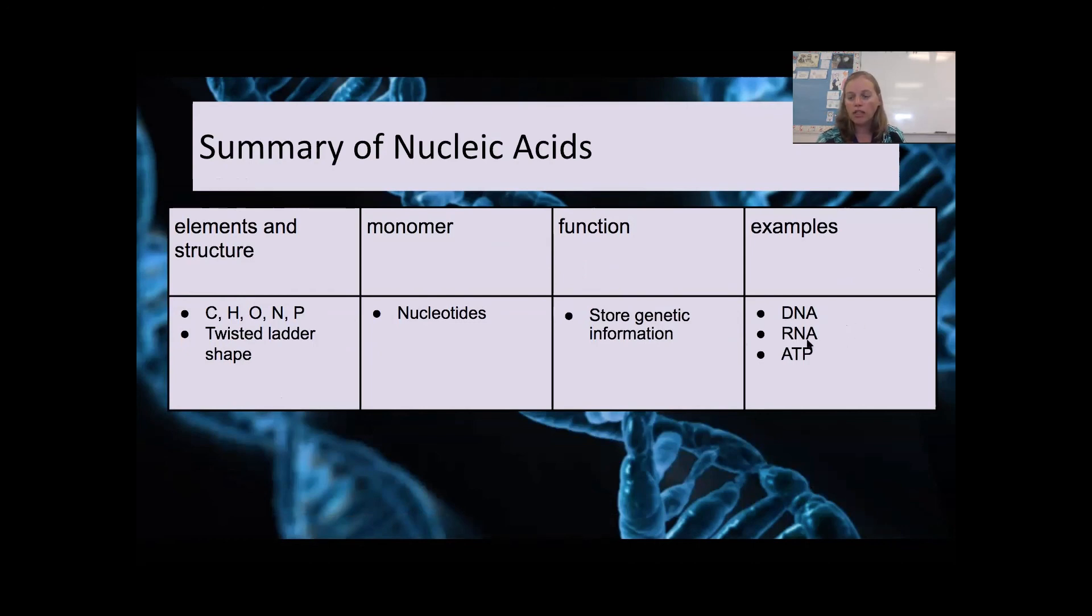And we have some examples. DNA and RNA are the two I really want you to think of. ATP is used for energy, and it's a special type of nucleic acid with three phosphates instead of one, and it's going to use an adenine base. All right, that's everything for lipids and nucleic acids. So please complete your final assignments and quizzes, and then we will have the test later on this week.